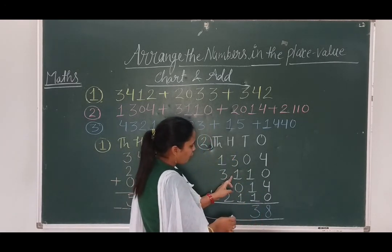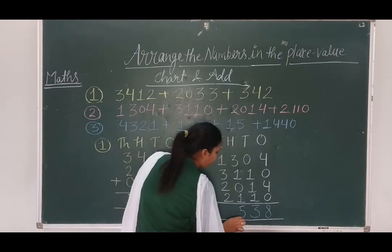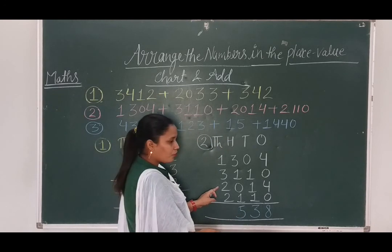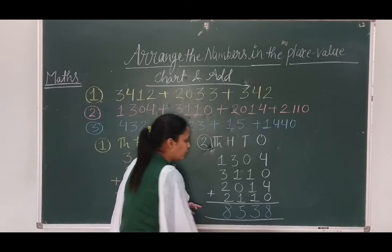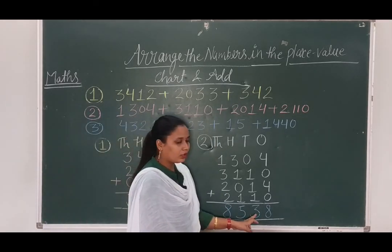3 plus 1, 4. 4 plus 1, 5. 5 plus 0, 5. 3 plus 1, 4, 4 plus 1, 5, 5 plus 0, 5 plus 2, 7 plus 1, 8. So, this question, our answer is 8538.